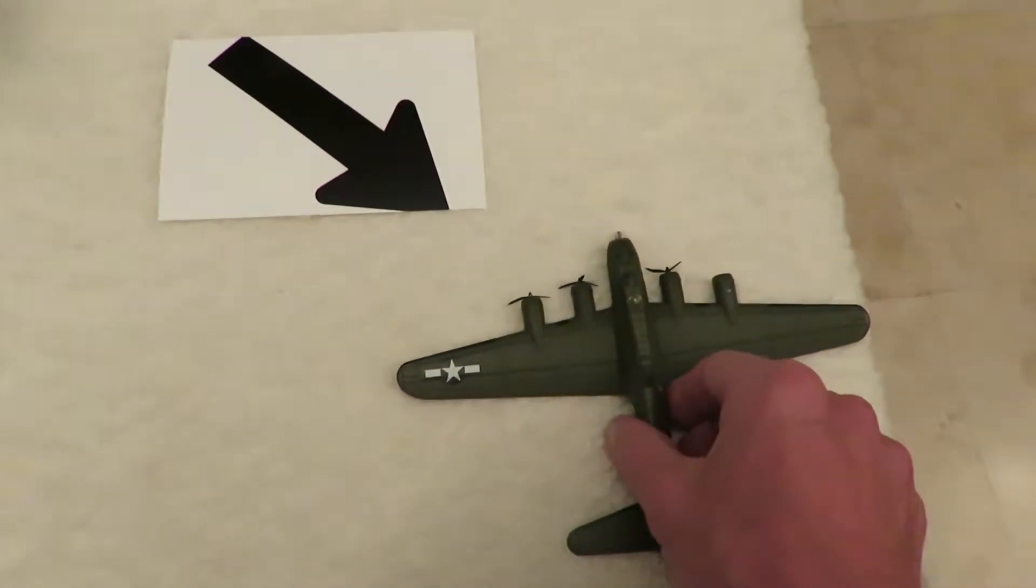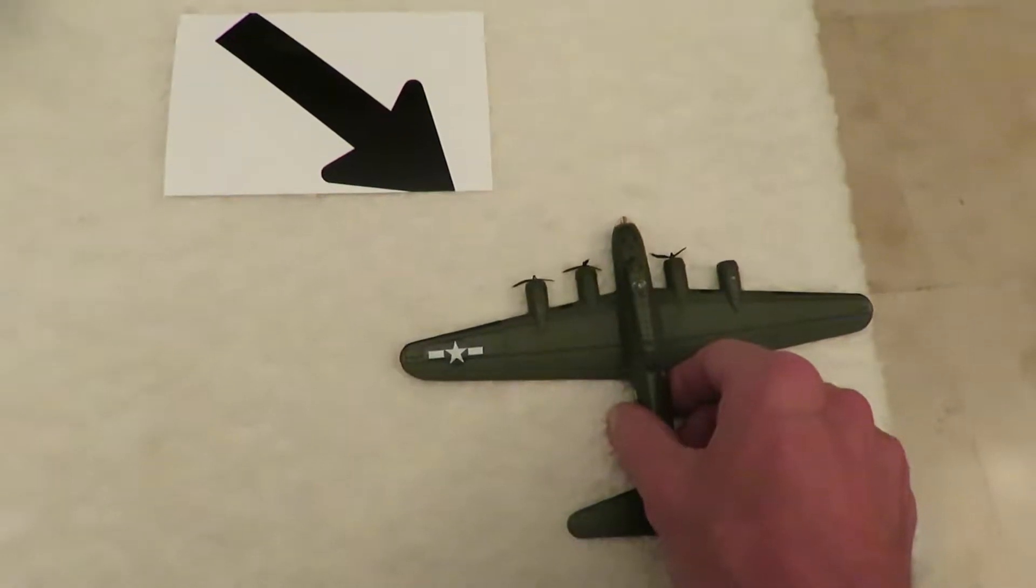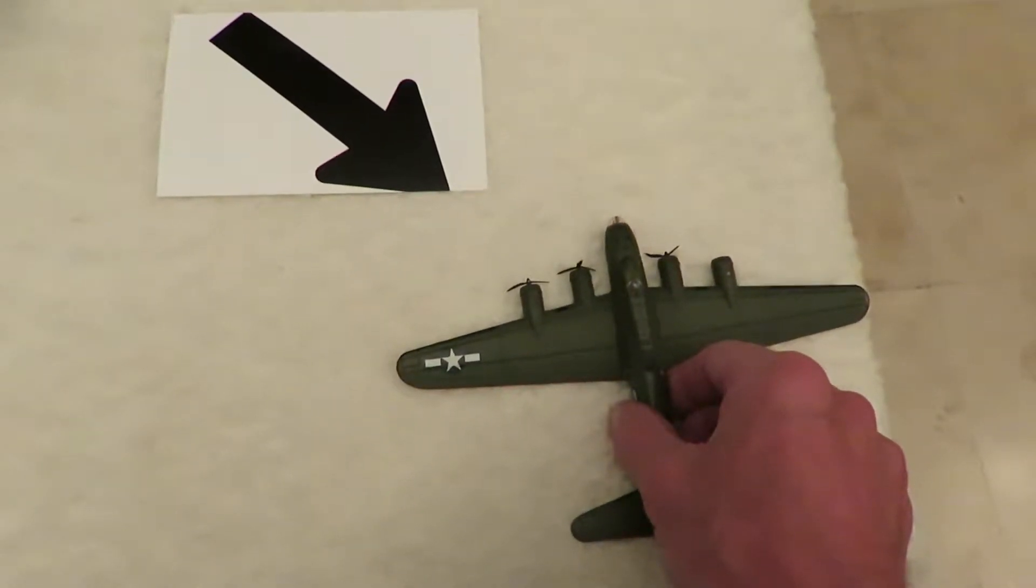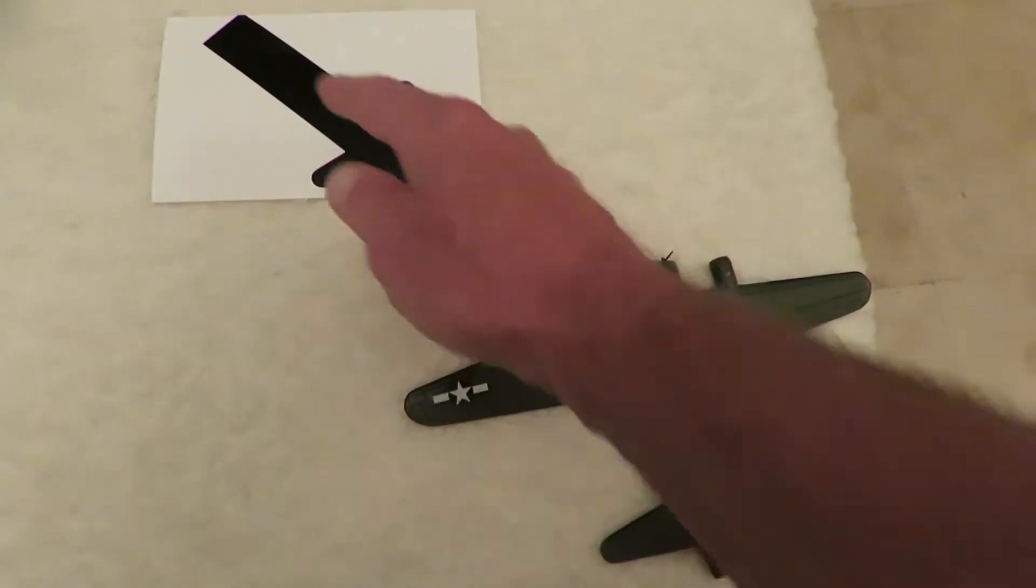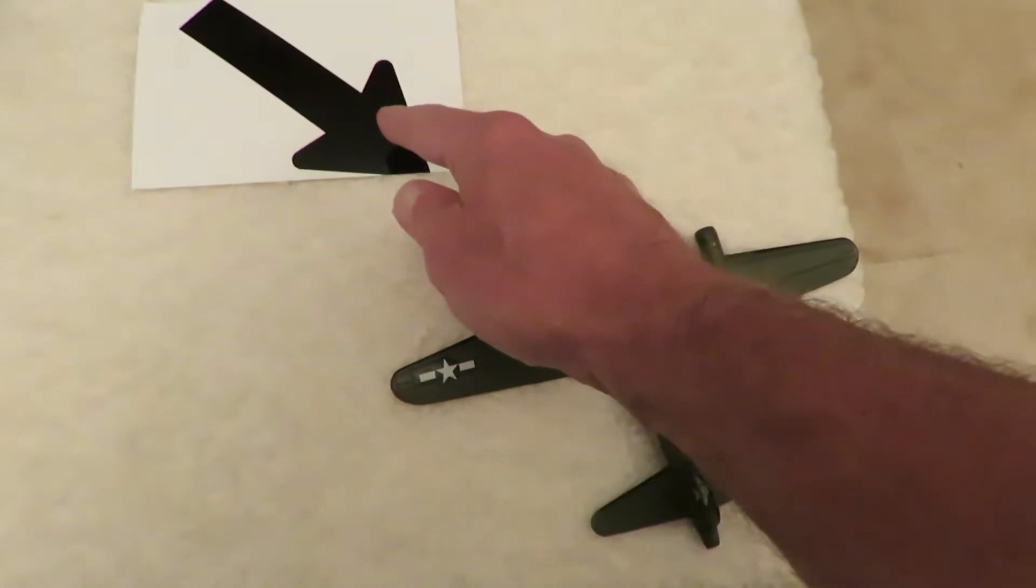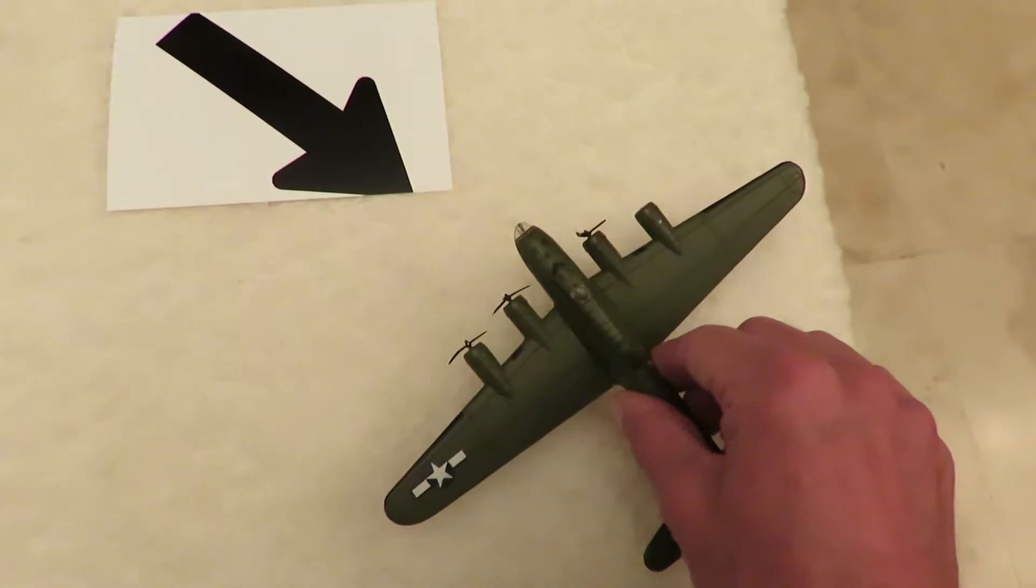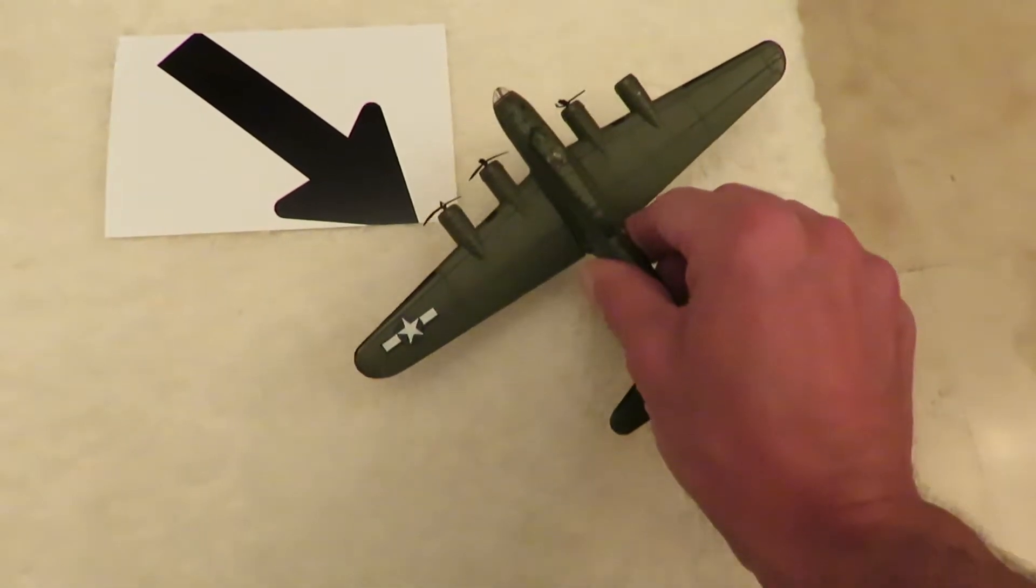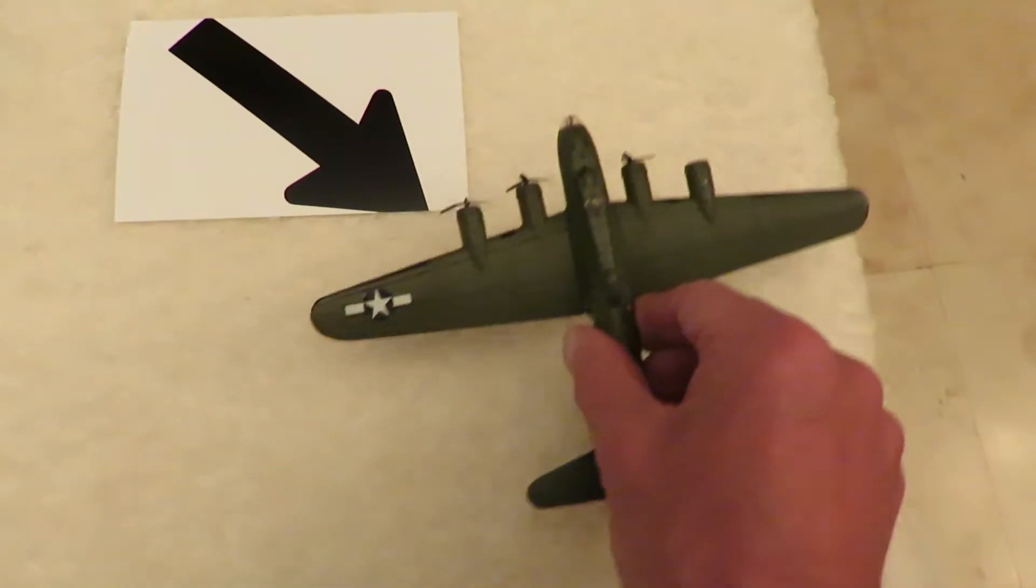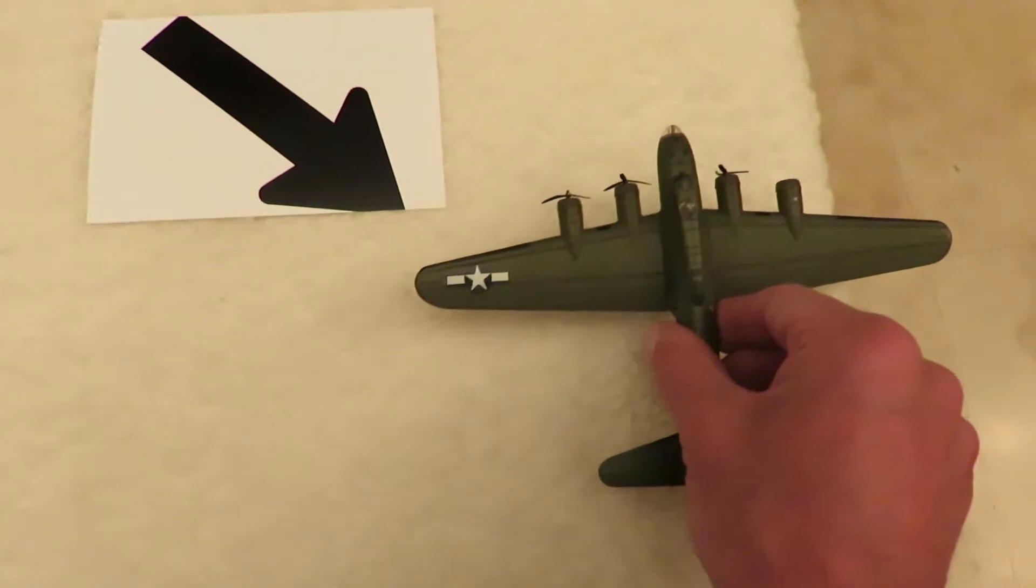Since man began traveling the waters and flying through the air, he has known about the effects of wind on direction taken. When dealing with wind not coming from directly ahead or behind, the aircraft must angle into that wind to continue on a straight line to the destination. Otherwise, the aircraft will be pushed further and further downwind.